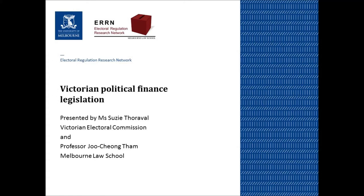From Royal Assent, there will be a ban on foreign donations — a donor will need to be an Australian citizen or resident, or a business with a relevant Australian Business Number. There will also be a ban on anonymous donations over $1,000, so the donor will need to be identified, although not notified until the 25 November period. Registered political parties can also nominate a nominated entity from Royal Assent, which will be added to the register maintained by the Victorian Electoral Commission.